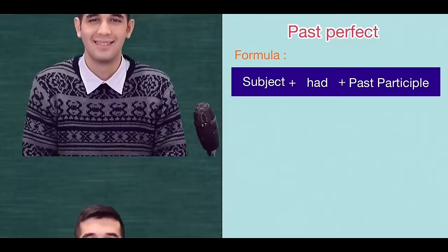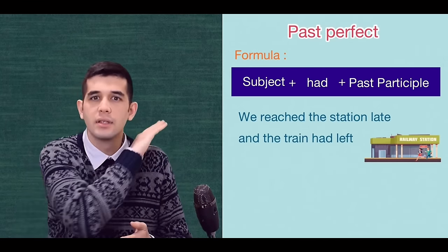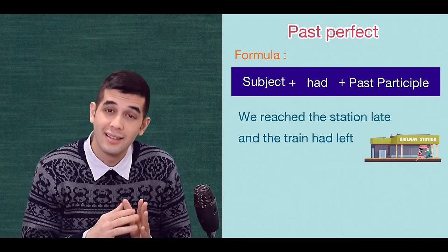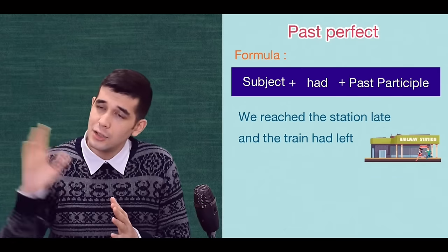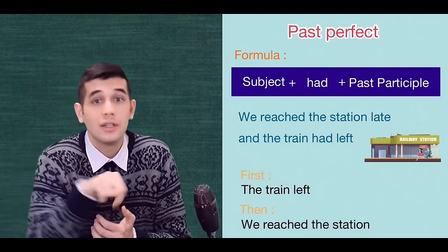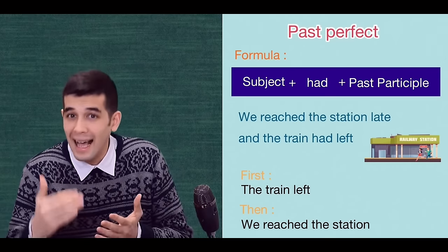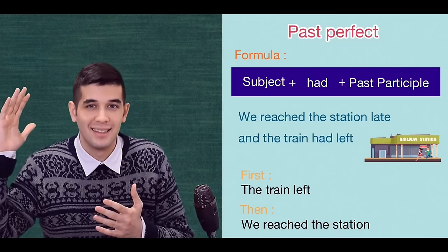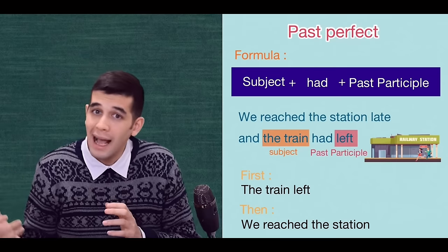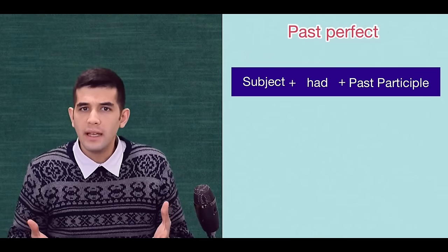Another example: 'We reached the station late and the train had left.' First, the train left, then we reached the station. The train is the subject, plus 'had', plus 'left', which is the past participle of the verb 'leave'. The train had left.